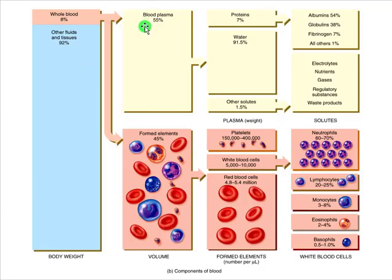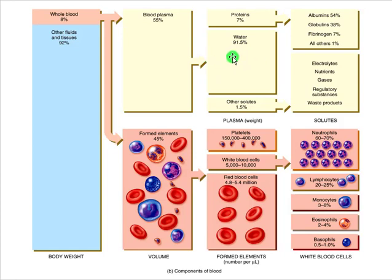Let's look at plasma first. You want to know that plasma is made up mostly of water — about 91.5%. The point is it's mostly greater than 90% water in that plasma. What makes up the other stuff? The other stuff — and this is what we need to spend the most time talking about — are proteins.